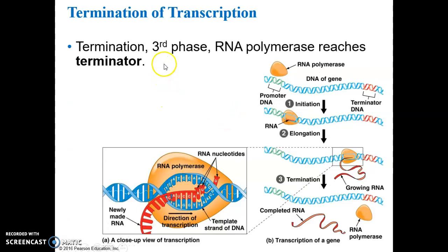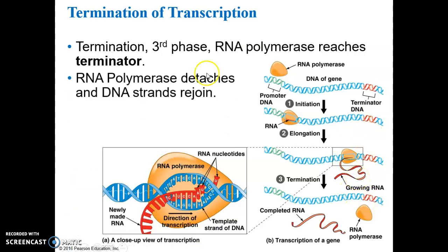Finally, the termination phase - the third phase. The RNA polymerase reaches what's referred to as the terminator. This is a sequence of bases that signals the end of the gene or allele that's going to get expressed. The RNA polymerase molecule reaches the terminator, termination occurs, the RNA polymerase detaches from the DNA molecule, the DNA strands reattach to form the double helix, and the completed RNA molecule is released.